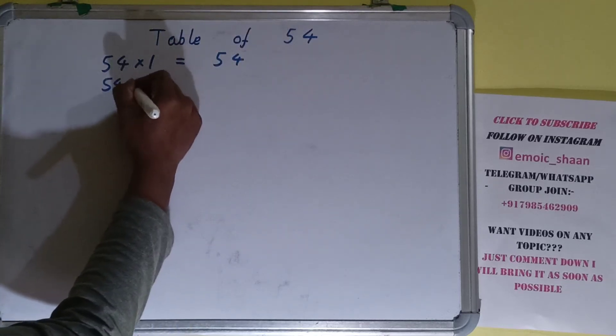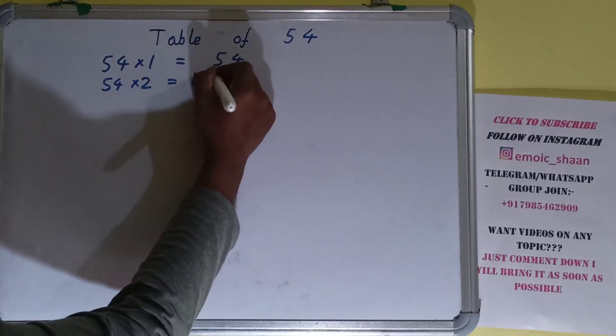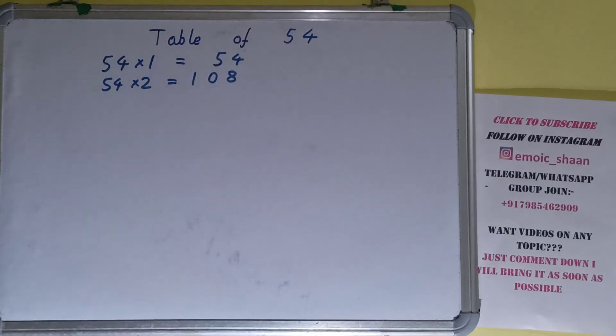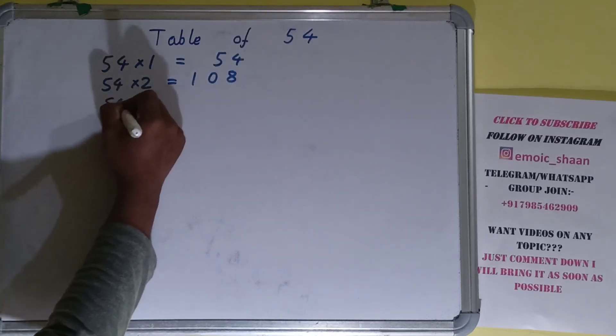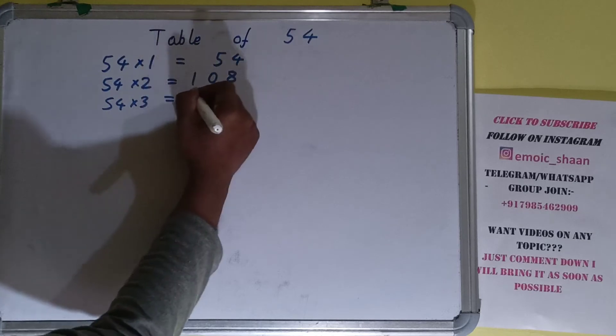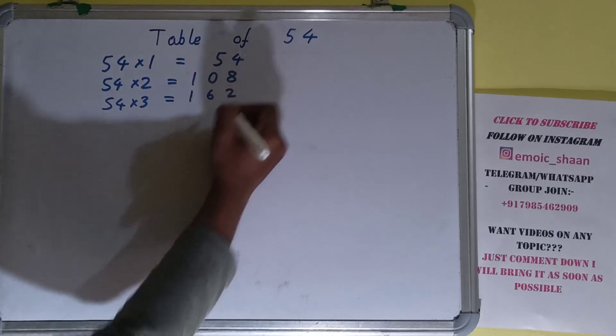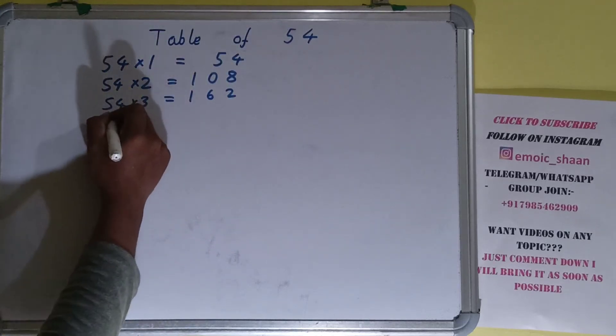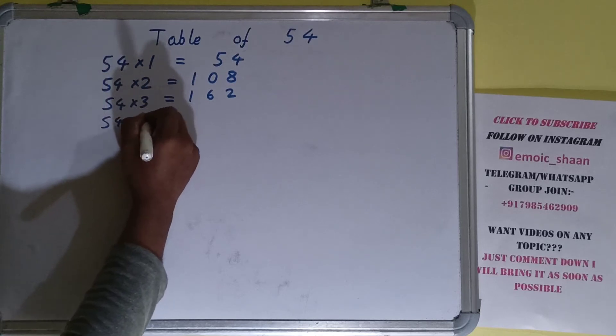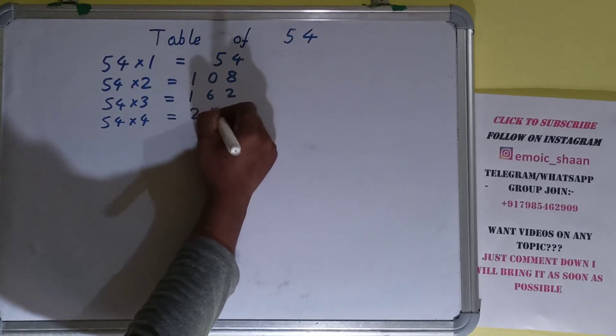54 into 2 is 108. 54 into 3 is 162. 54 into 4 is 216.